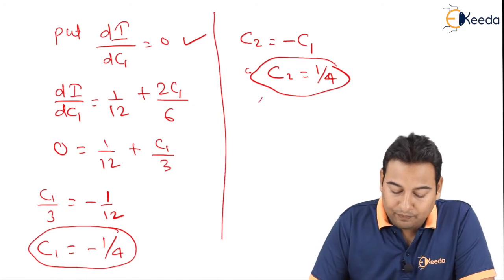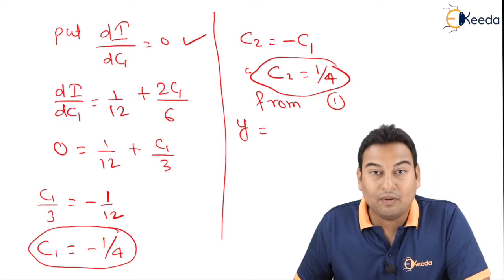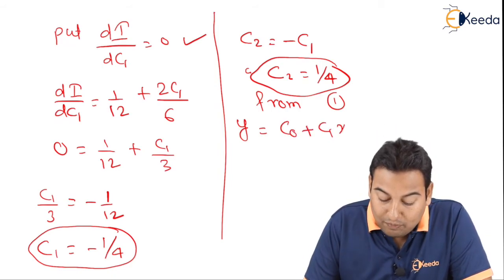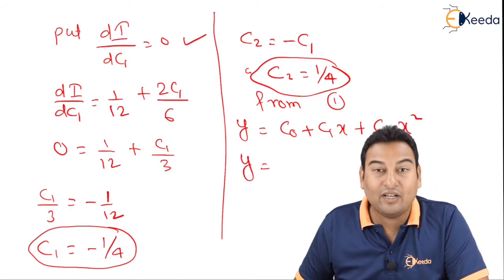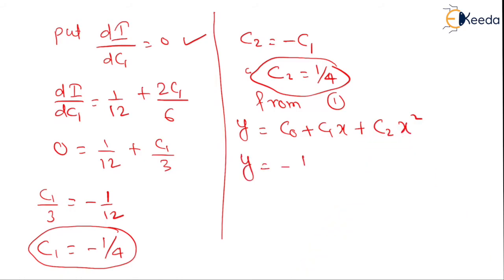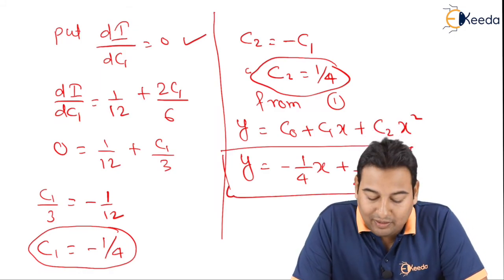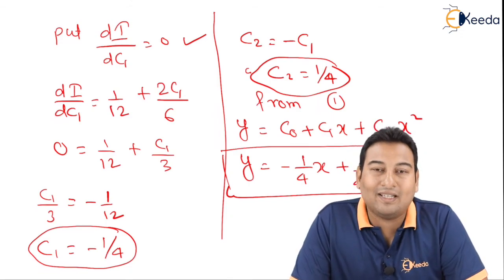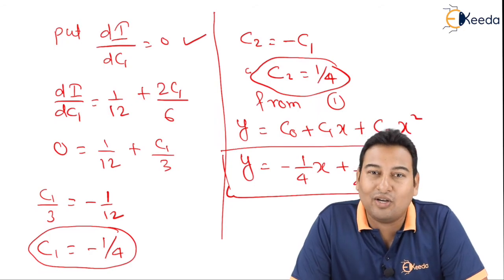Step 5: Write the final solution. y = c0 + c1x + c2x². With c0 = 0, c1 = −1/4, and c2 = 1/4, the solution is y = −x/4 + x²/4. This is the solution obtained by using the Rayleigh-Ritz method. This topic is very important — hope you understood. Thank you.